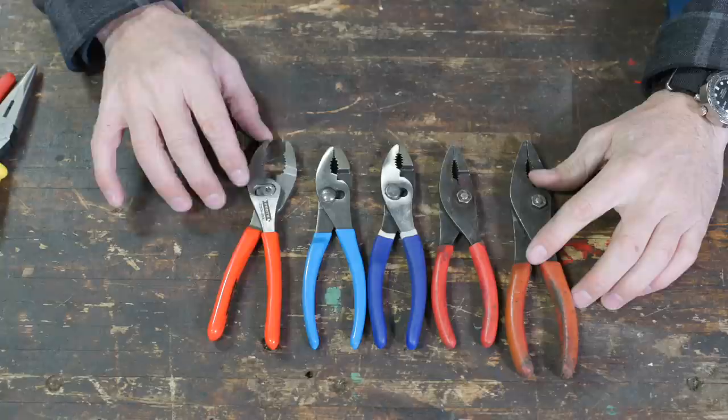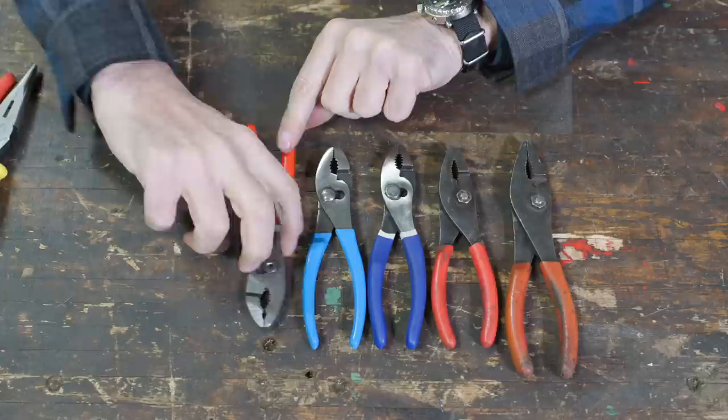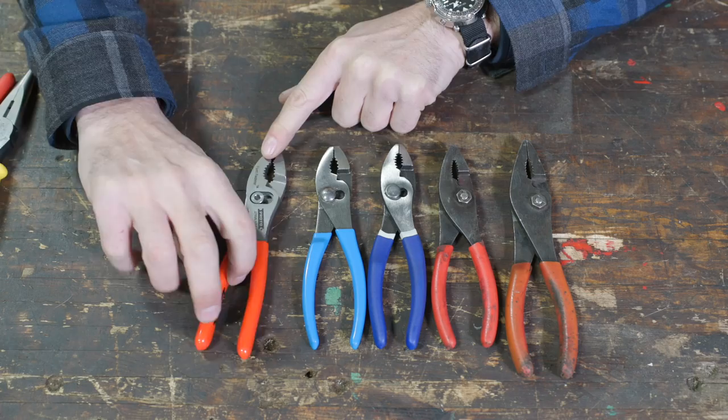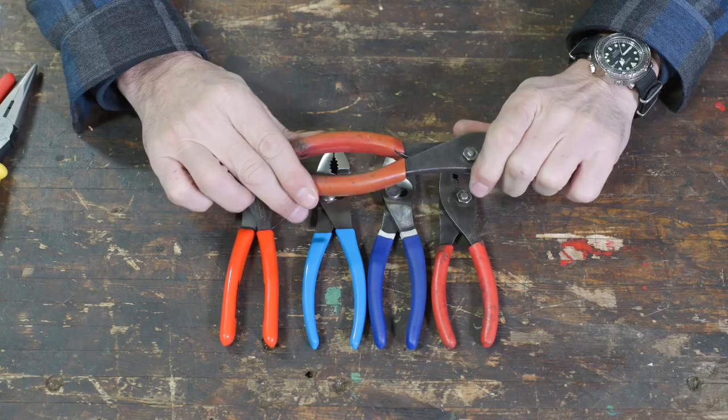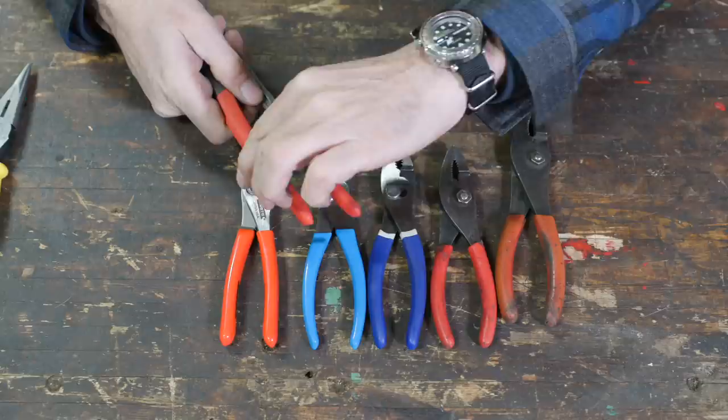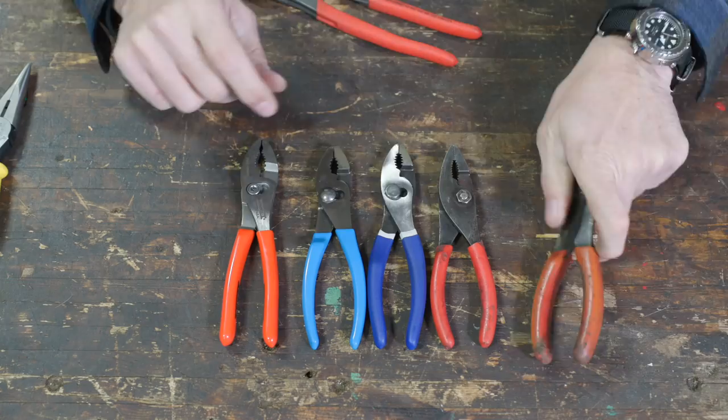When you work on cars and work on stuff a lot, you'll come in situations where you need these to sit flat and they won't because they've got an adjustment nut on there. So what they've done here is kind of innovative by recessing that down. You just have a smoother pair of pliers. But the round jaws, the build quality, the finish is not super nice. And then the cheap vinyl hand grips, I don't like that stuff.